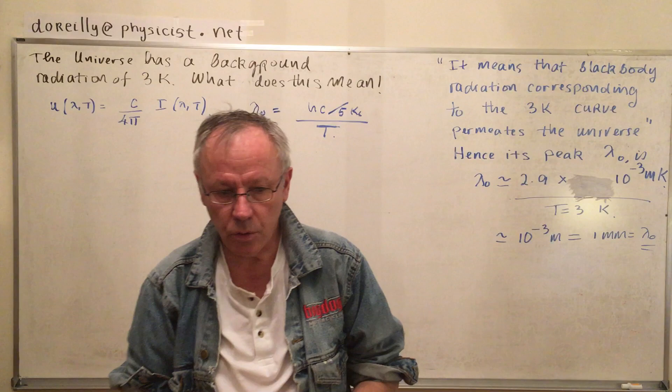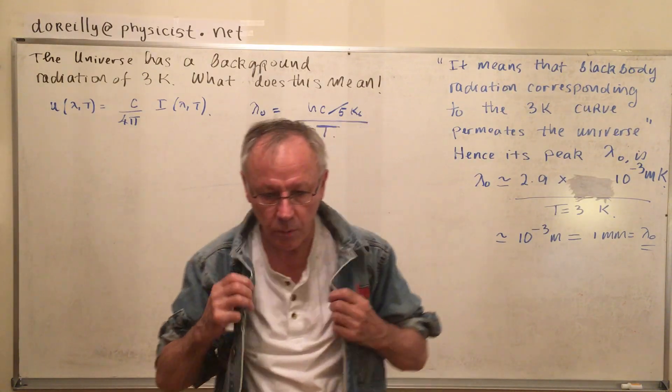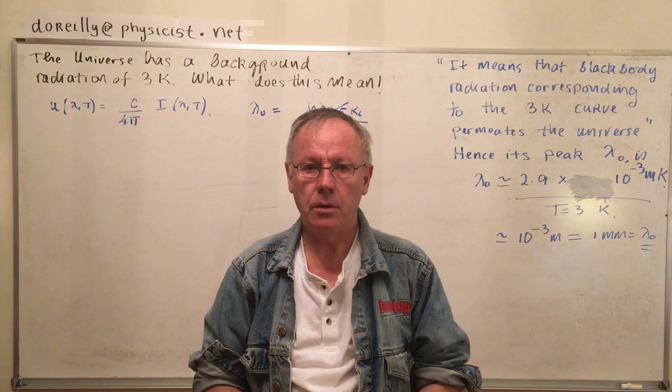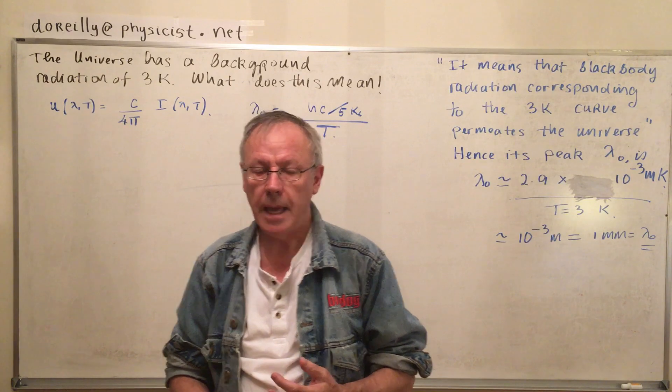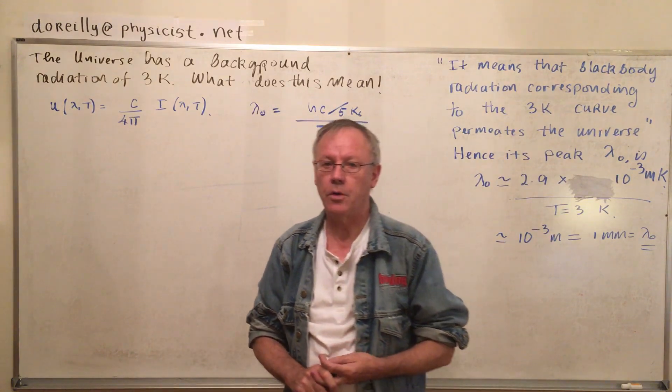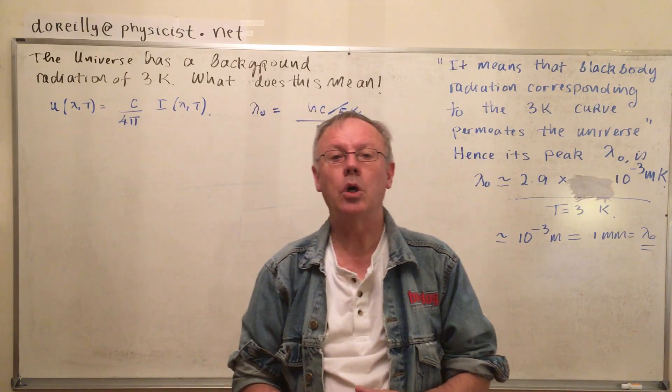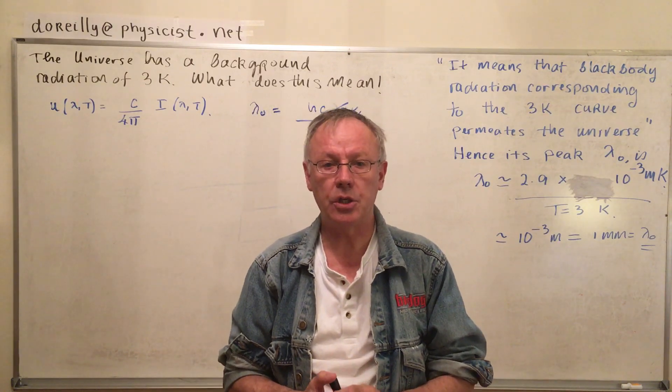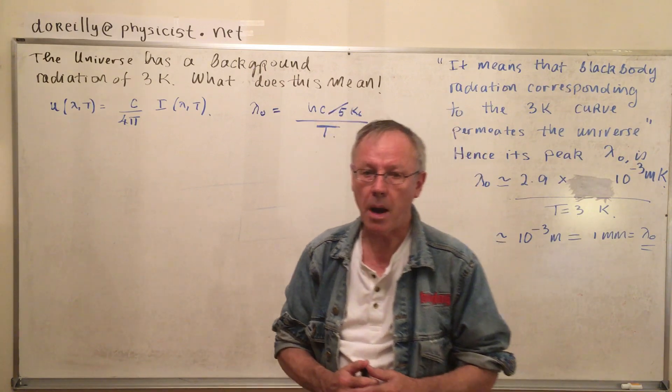So what does that mean? Well it goes back to Edgar Allan Poe, the same guy who wrote The Pit and the Pendulum, The Cask of Amontillado, Annabelle Lee, and so on. What's that going to do with him? Well he answered first what's called Olber's Paradox. Here's the general idea. Well first of all let's state the Olber's Paradox.